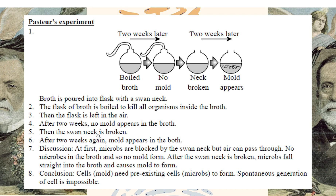Then they broke the swan neck. After two weeks, the mold appeared. So what is going on? After breaking the swan neck, the microbes went inside, and there were microbes there, and the microbes can grow and grow — becomes new mold. So the discussion is: at first the microbes are blocked by the swan neck. Swan neck means sealed for microorganisms — only air can pass through. So no microbes enter the broth, and so no mold. After the swan neck is broken, microbes fall into the broth, and then mold comes. The conclusion: mold needs pre-existing microbes to form. So we can say cells need pre-existing cells to form — this disproves the theory of spontaneous generation.